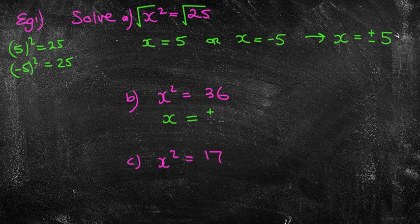Well, hopefully, you might have said x equals plus or minus 6. That's because the square root of 36 is positive 6, and I could have the positive version or the negative version. What about the next one?